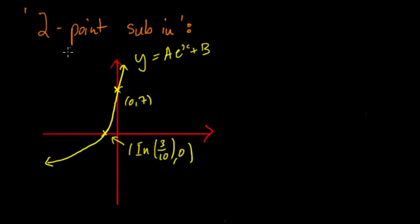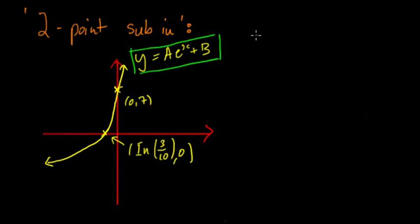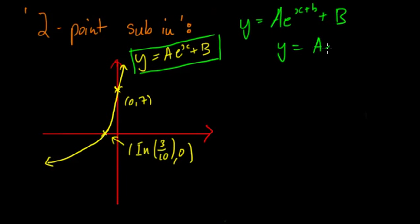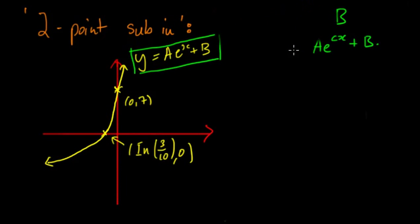To begin, we'll think about the typical two-points substitution method. For an exponential, the general equation is y = ae^x + b. An exponential could also be written as y = a^(x+b) or y = ae^(cx) + b, so you have to look at what general form they give you. In this case they've given us y = ae^x + b, so we don't have to worry about the other forms.